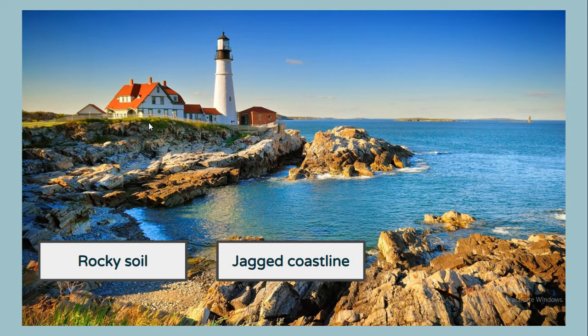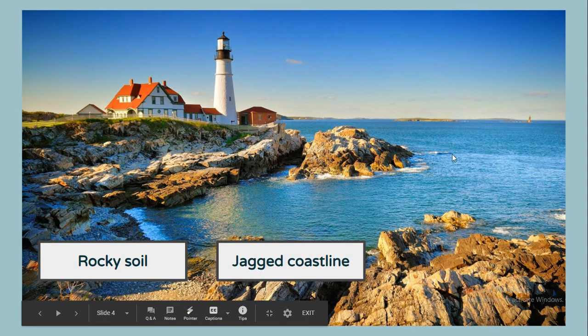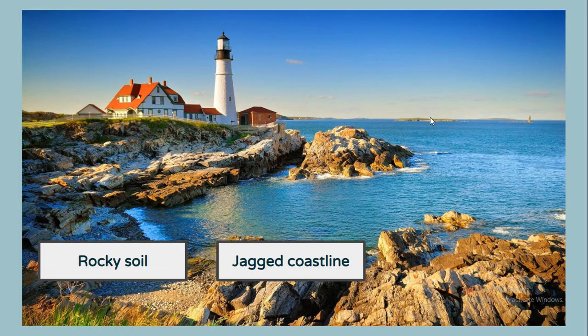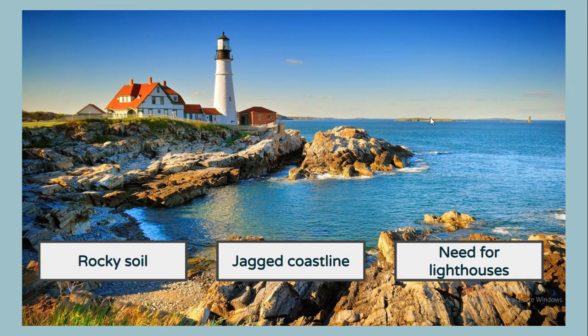The next thing to point out is what we would call a jagged coastline. Notice how the coastline kind of goes out and in and around — there are rocks and rock formations. Because that coastline was so jagged and irregular and not smooth, it meant that ships needed lighthouses and things when it was dark so that they wouldn't crash into the coast without realizing it.